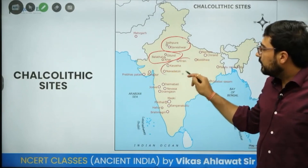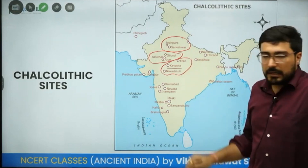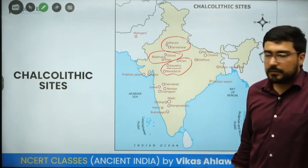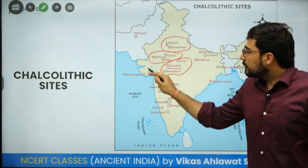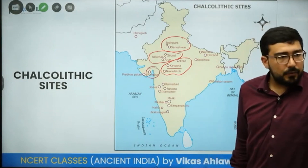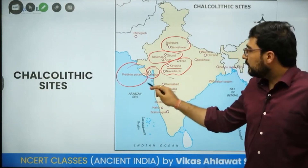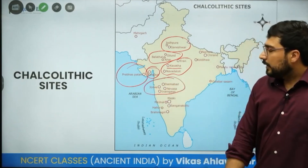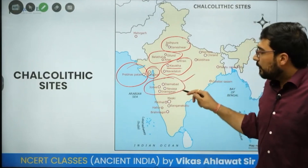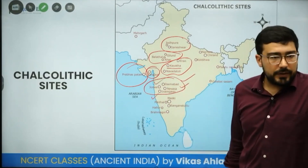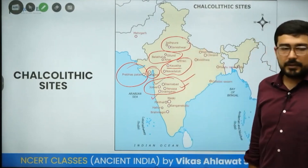Further sites include Inam, Kaitha, and Navdatoli. Kaitha was itself a distinct culture, and thereafter we see the beginning of the Malwa culture which includes Kaitha and Navdatoli. There was also the Rangpur culture in Gujarat, along with Prabhas Patan. For the Jorwe culture, important sites include Daimabad, Nevasa, Inamgaon, and Jorwe itself. This is how the various Chalcolithic cultures developed across the subcontinent.